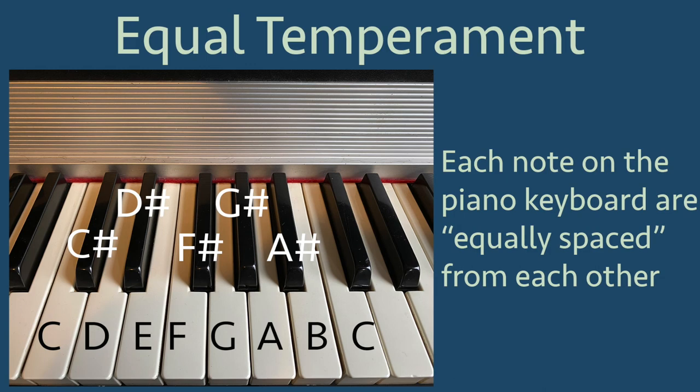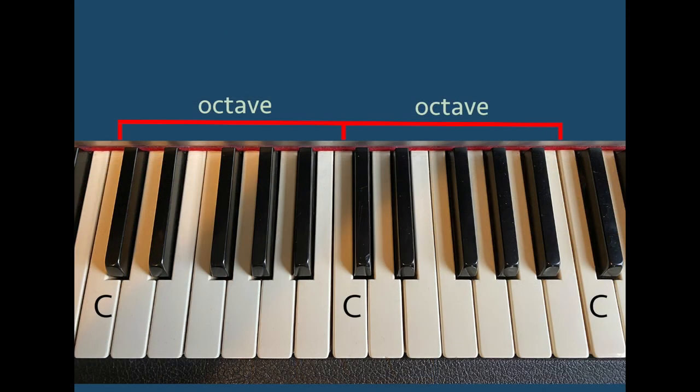The idea with equal temperament is to have equally spaced notes to make up the octave. If you know middle C on a piano, then there is another C an octave above, and another an octave above that, and also octaves going below middle C.